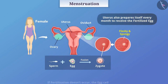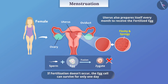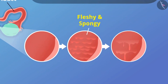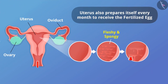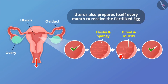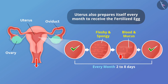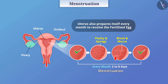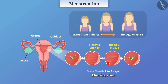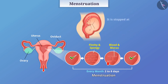But in case fertilization does not occur, the egg cell can survive only for one day. Therefore, there is no need for the new layer when fertilization does not occur. This layer is slowly broken and comes out from the vaginal tract in the form of blood and mucus, after which the uterine wall undergoes repair. This entire process is completed in about 2 to 8 days and is repeated almost every month — this is called menstruation. The cycle of menstruation starts from puberty and continues till the age of 45 to 55, stopping at pregnancy. This process is controlled by hormones.